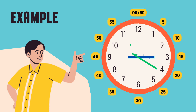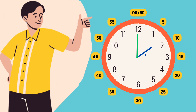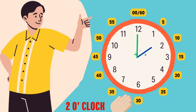Let's practice to understand it better. If the hour hand is on three and the minute hand is on twelve, the time is three o'clock. Now your turn — if the minute hand is at twelve and the hour hand is at two, what's the time? That's right, the time is two o'clock!